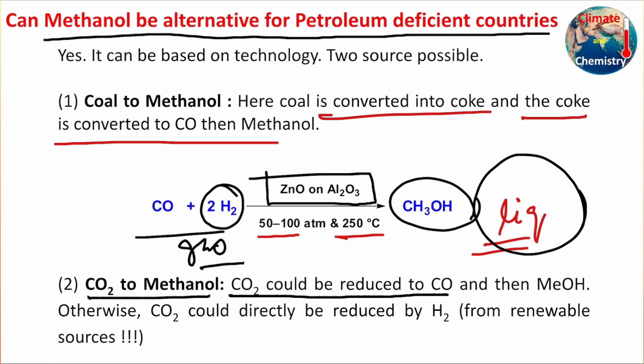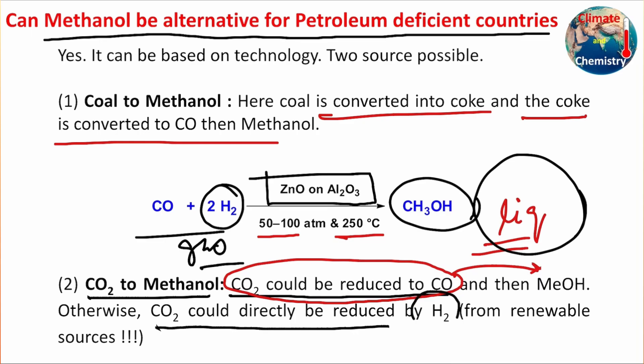Carbon dioxide can be reduced to carbon monoxide photochemically, electrochemically, or photoelectrochemically — and this is feasible when the electricity source is renewable. The world is moving against coal, which currently supplies about 36% of electricity worldwide. Carbon dioxide can be reduced to carbon monoxide and then to methanol, or carbon dioxide can be directly reduced by hydrogen. In this case, the hydrogen must be produced from renewable sources — so-called green hydrogen, produced by electrolysis of water using renewable electricity, which also produces oxygen as a byproduct.